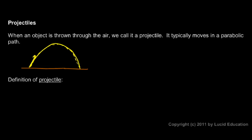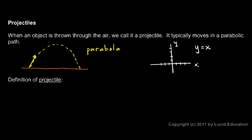Mathematically, this curve is what we call a parabola. You might have seen this in math class. Let's take a quick look at a parabola. If you make a graph — an xy graph — and we'll put some marks on here. These are your xy axes. Take an equation like y equals x squared.